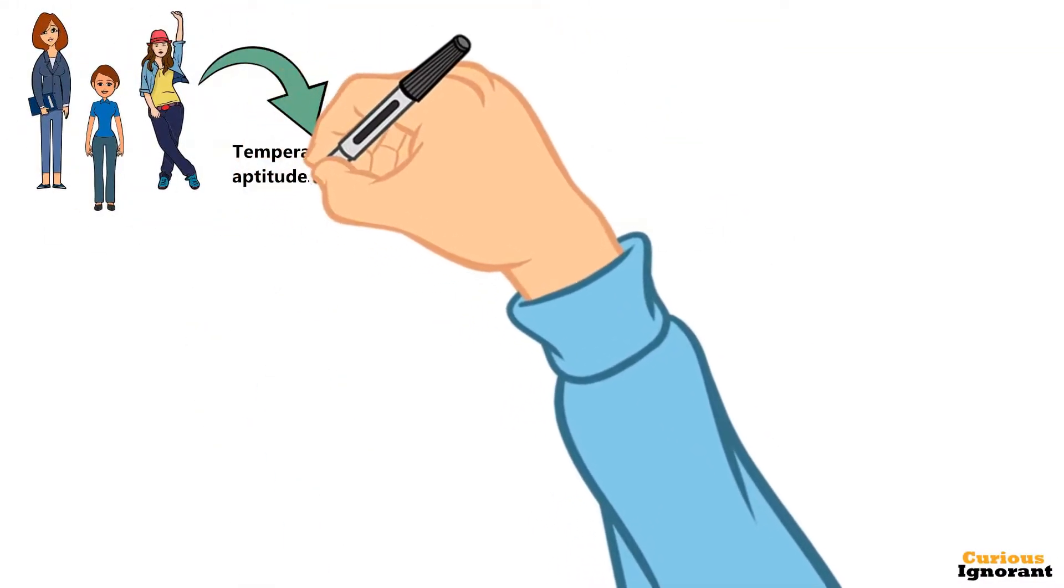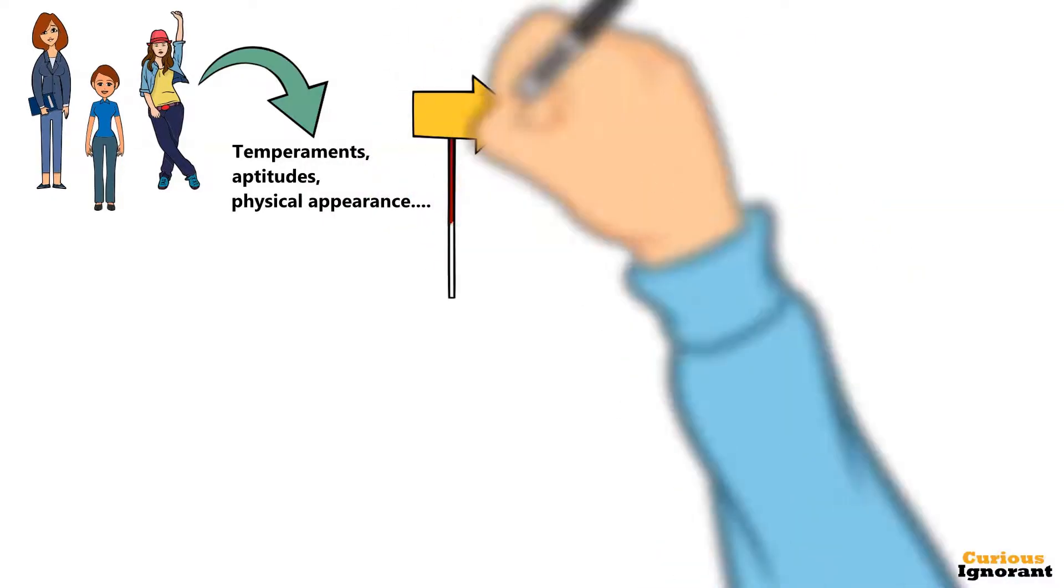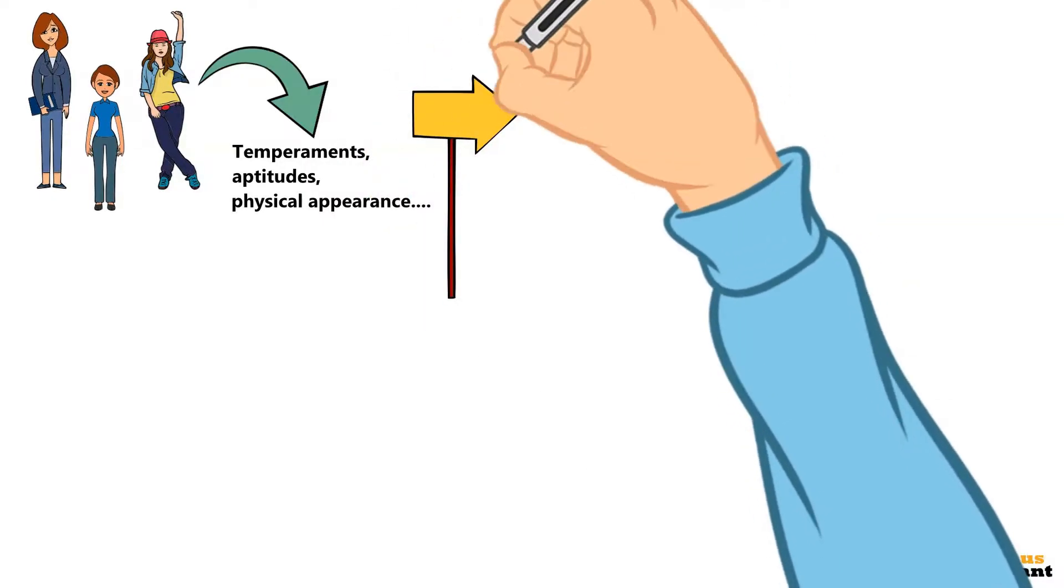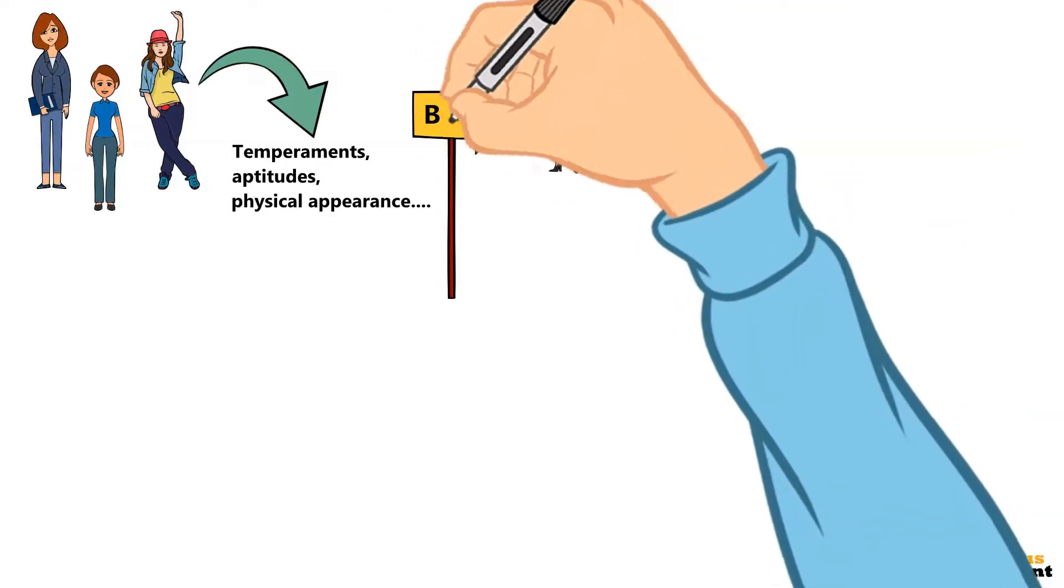People differ in their temperaments, aptitudes, and physical appearance. However, one thing mostly defines people's success or failure more than this.